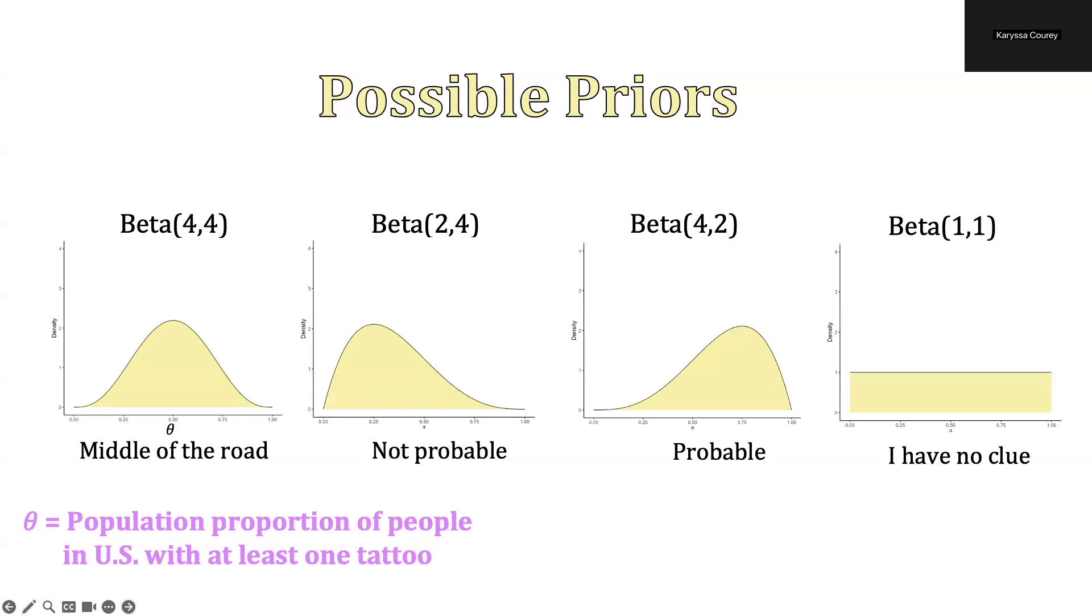Alternatively, perhaps you thought that the population proportion of people with a tattoo was relatively low. Maybe you thought it was relatively high. Or you had no idea, and so you could just put a flat line representing that all values are equally plausible here.